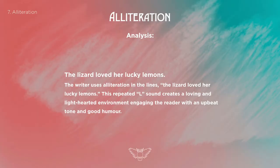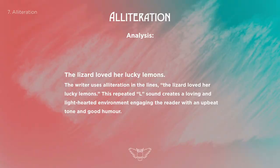So: 'the lizard loved her lucky lemons.' The writer uses alliteration in the line 'the lizard loved her lucky lemons.' This repeated L sound creates a loving and light-hearted environment, engaging the reader with an upbeat tone and good humor. Just let that sink in. Things I've done well: I pinpointed the literary device immediately and called it out in the first sentence. Another thing — I quoted straight away.